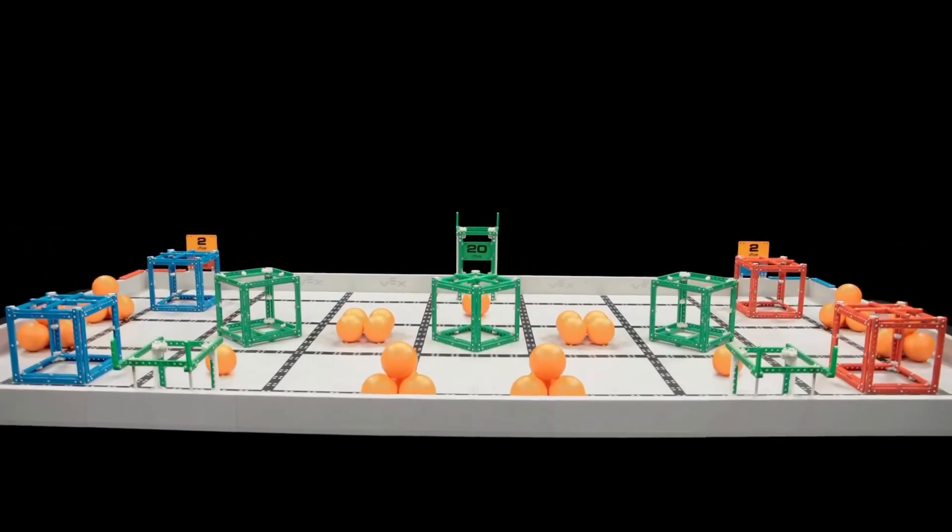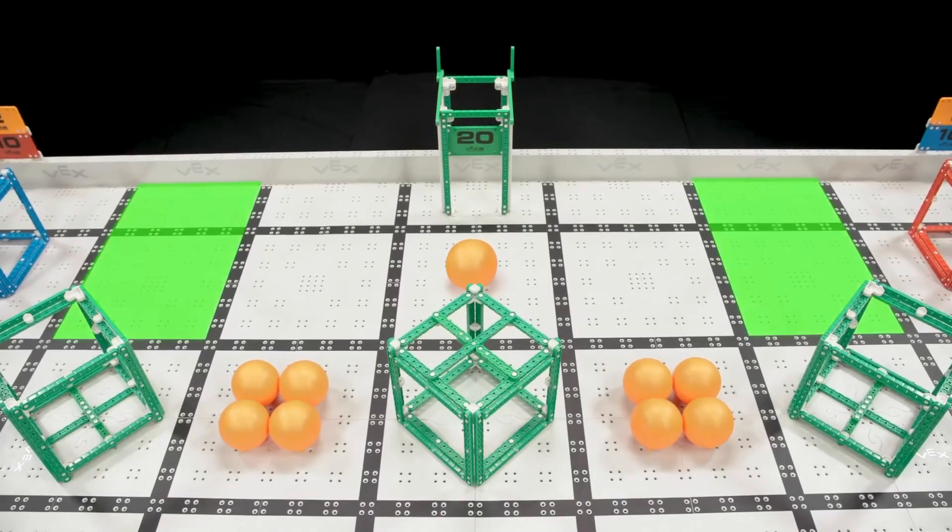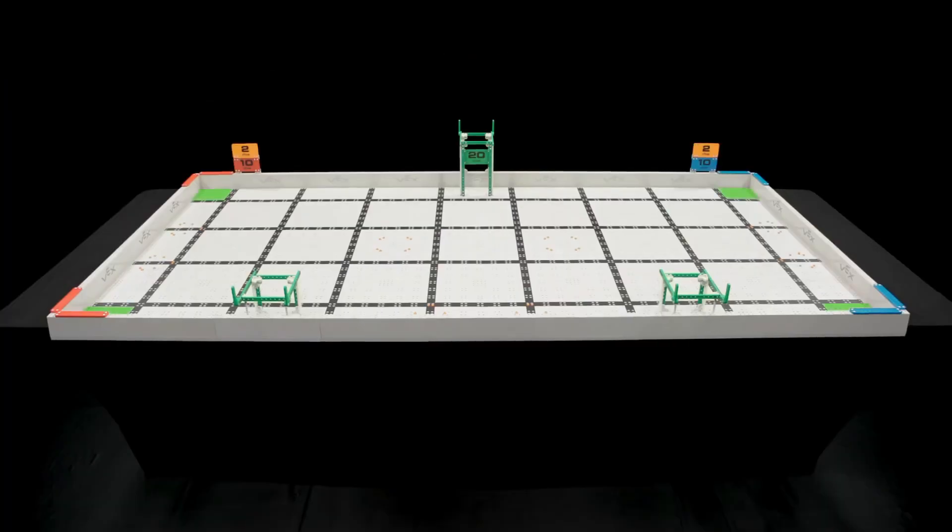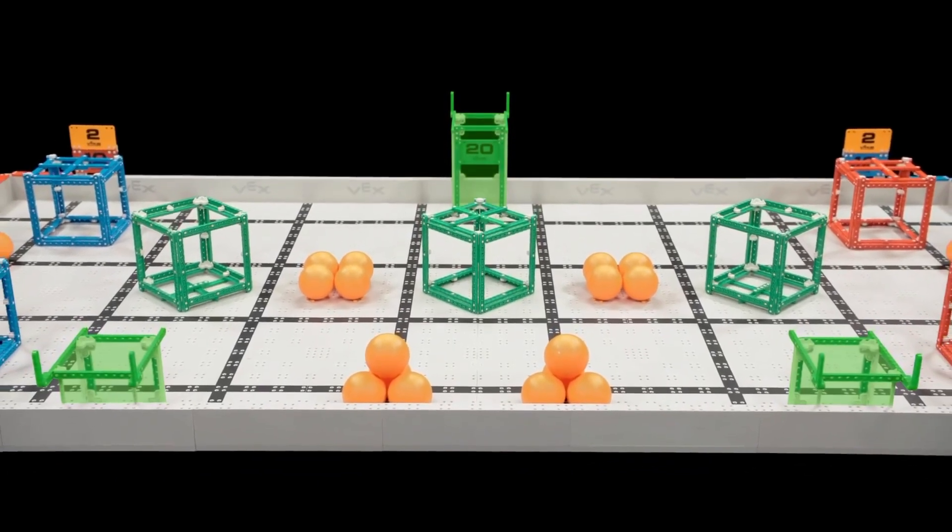VEX IQ Challenge Squared Away is played on a 4 foot by 8 foot field. Robots and game objects start on the field in predetermined positions. There are scoring zones in the four corners of the field, and three platforms along the sides of the field.